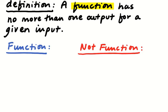It doesn't mean that it has an output for every potential input. For example, y equals 1 over x is certainly a function, but it's not defined where x is equal to 0.